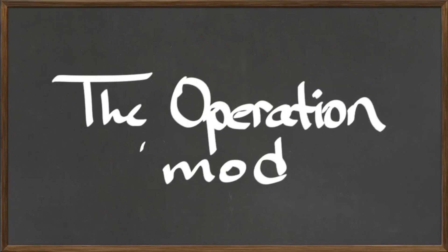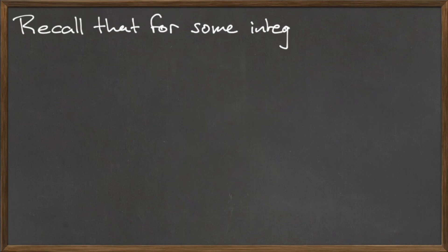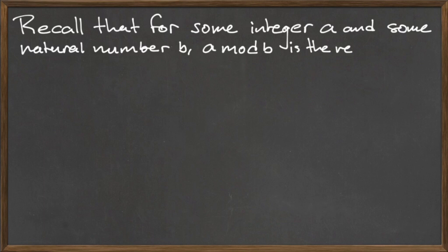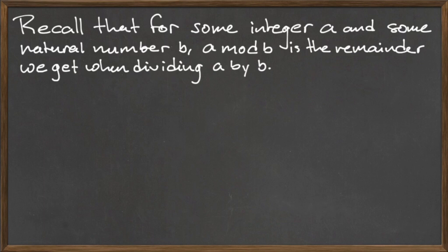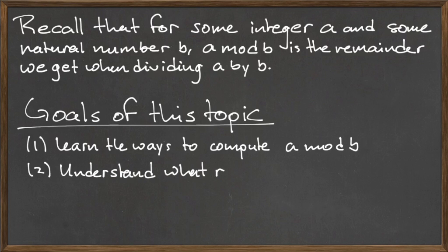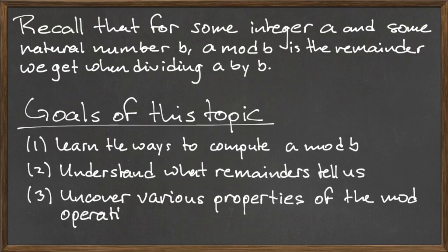In this video, we will take a look at the operation mod in greater detail. In a previous video, we mentioned that for some integer a and some natural number b, the quantity a mod b is the remainder of the division of a by b. To help us understand the concept of mod, this video has three main goals: to learn the various ways to compute a mod b, to understand what remainders tell us about the answer to a division problem, and to uncover various properties of the mod operation and how we can use these properties to simplify computations using mod.